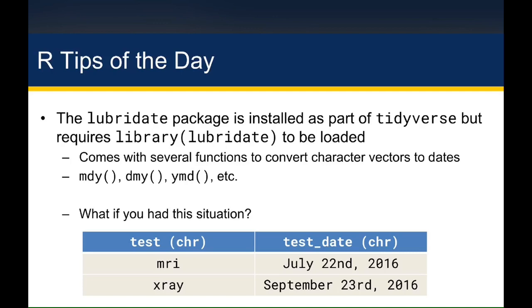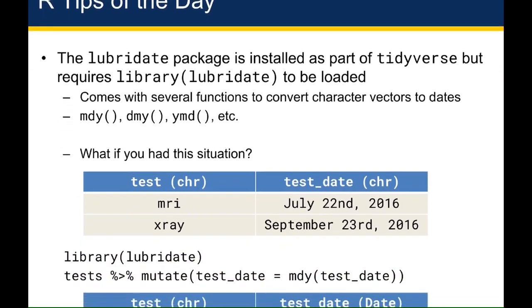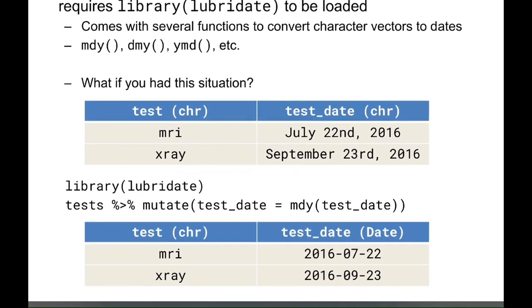For example, if you had the same data frame as in the last slide, except instead of '7-22-2016' the data frame said the MRI was performed on 'July 2, 2016', you could actually run the same exact line of code. Lubridate would correctly figure out the dates even though they had been written out in plain English rather than just with numbers. Lubridate makes the conversion of character date information into dates quite easy, which is really useful.